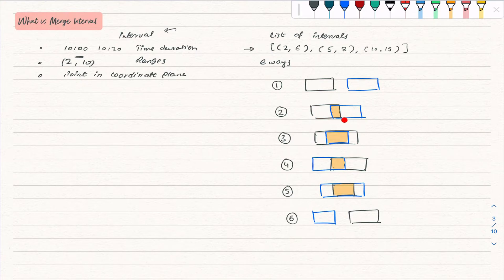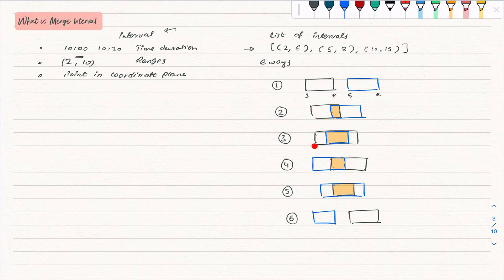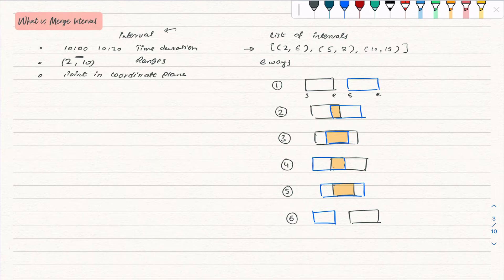In the third case, the first interval is so large that it completely overlaps the second interval. In the fourth case, the second interval starts before the start of the first interval but ends in between the start and end of the first interval. In the fifth case, the second interval completely overlaps the first interval. In the sixth case, the second interval ends before the start of the first interval. These are the six ways two intervals can relate with each other.